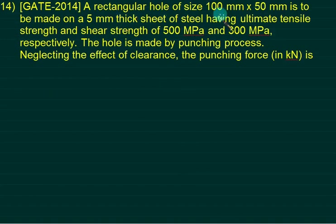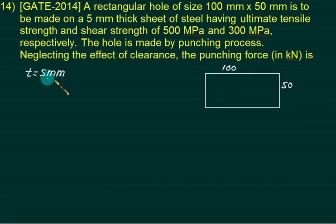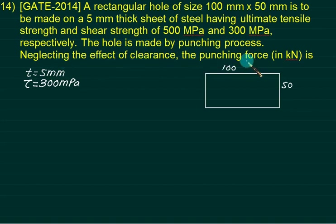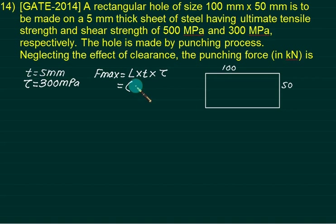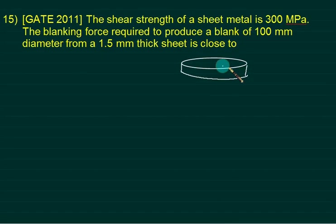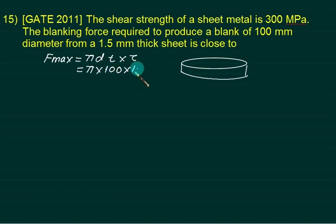Example: A rectangular slot of 100 × 50 mm is to be made in a 5 mm thick plate with ultimate shear strength 300 MPa by punching. Total cutting length = 2×(100+50) = 300 mm. F_max = 300 × 5 × 300 = 450 kN.